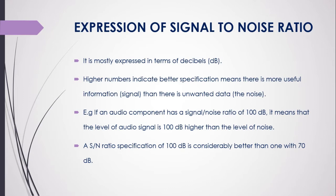A higher signal to noise ratio means there is more useful information and the noise level can be reduced. For example, if an audio component has a signal to noise ratio of 100 dB, it means that the level of the audio signal is 100 dB higher than the level of noise. A signal to noise ratio specification of 100 dB is considerably better than one with 70 dB.